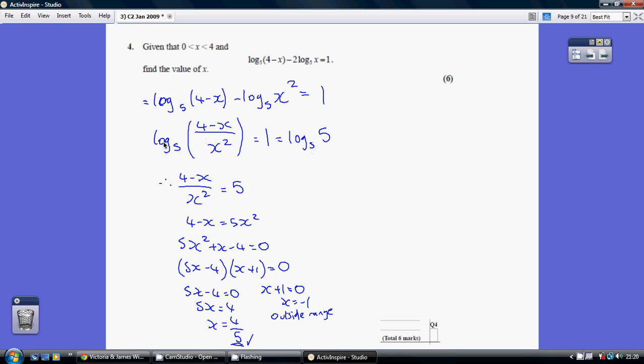Both terms are now log to the base 5 something, log to the base 5 something. So effectively, we're cancelling out the log bit—we're saying this equals this.